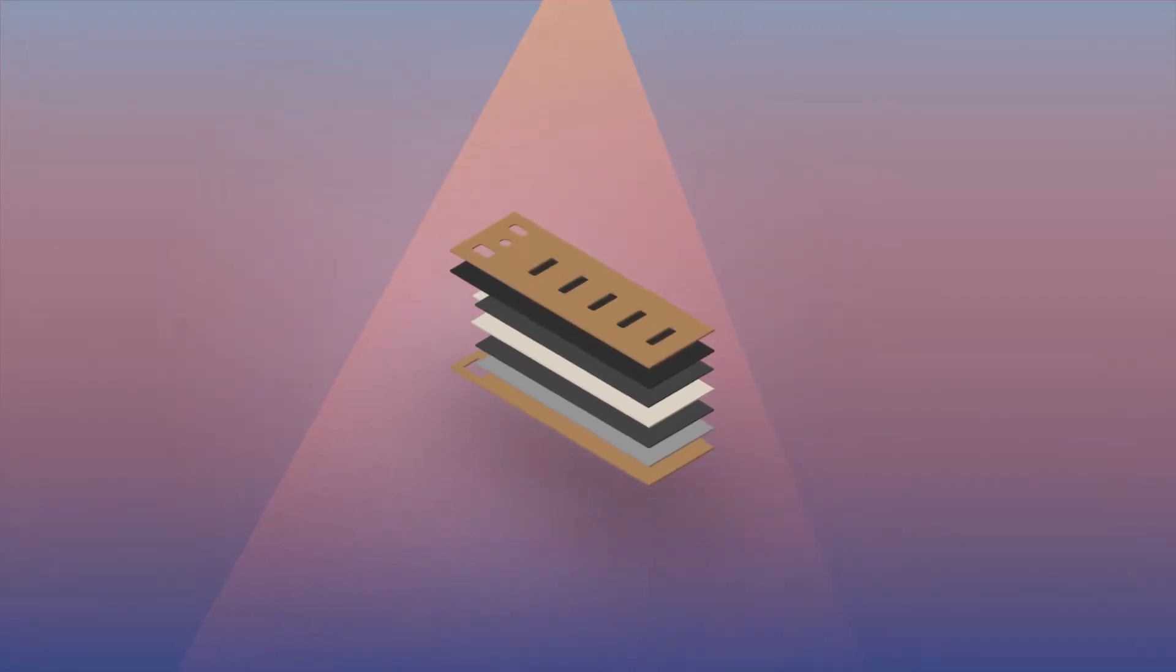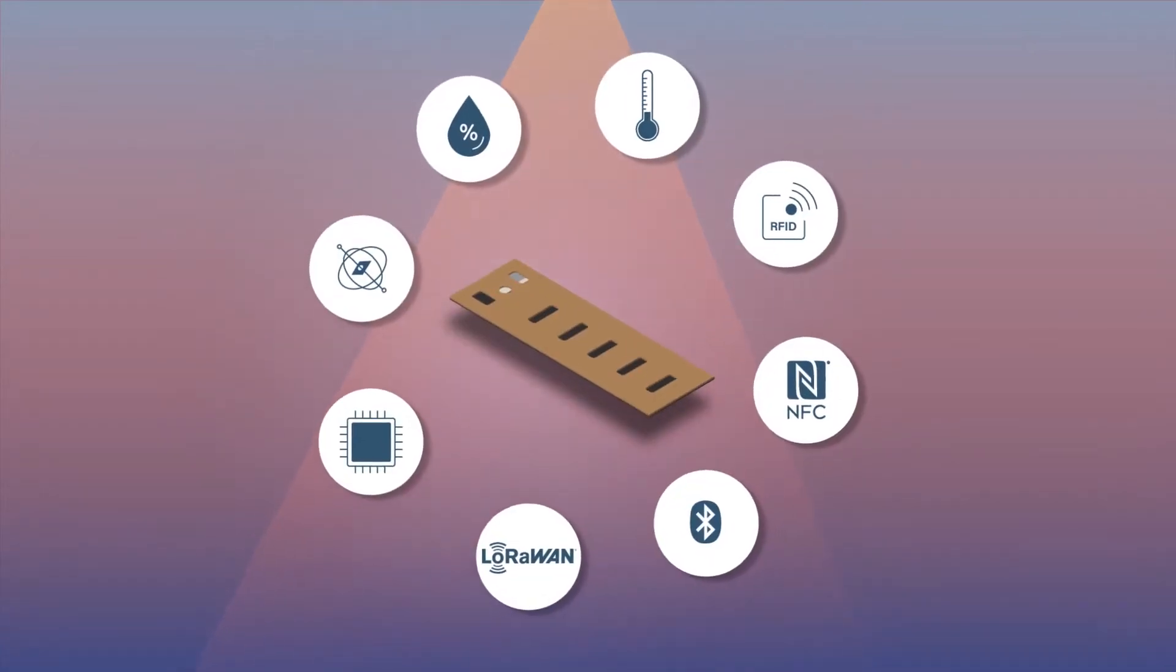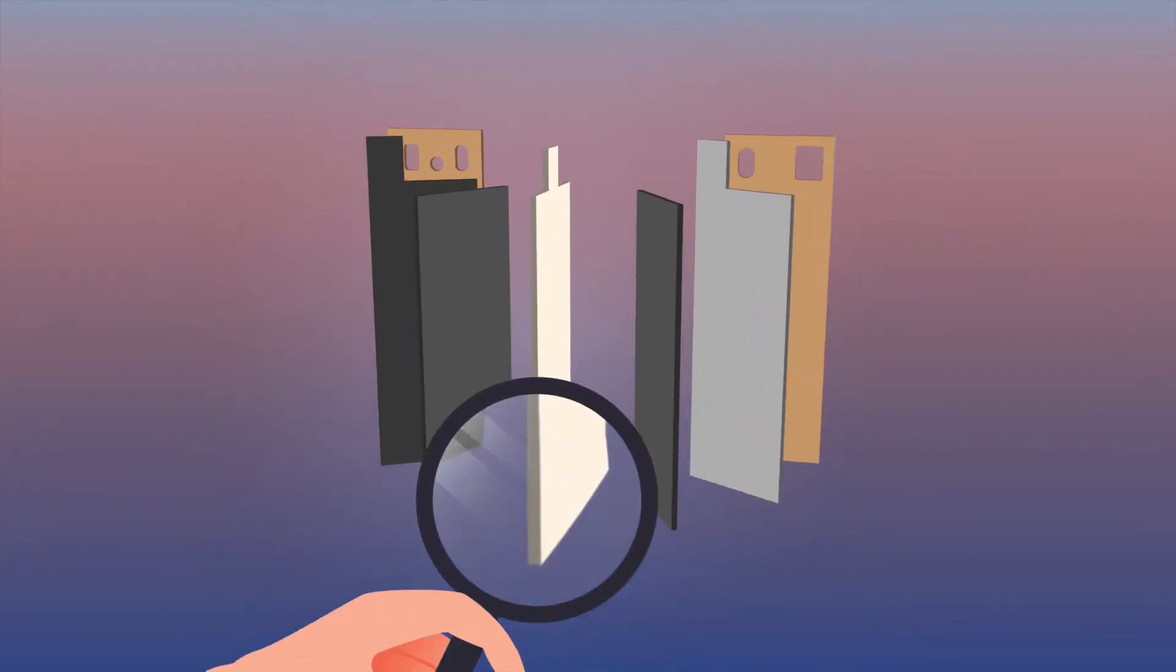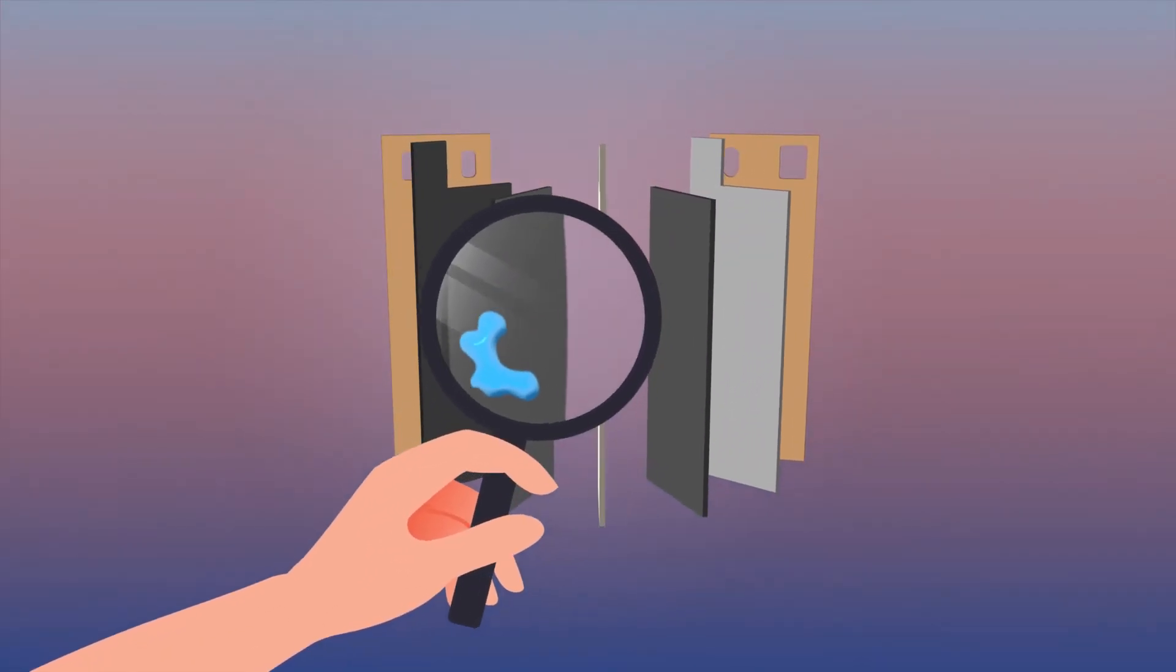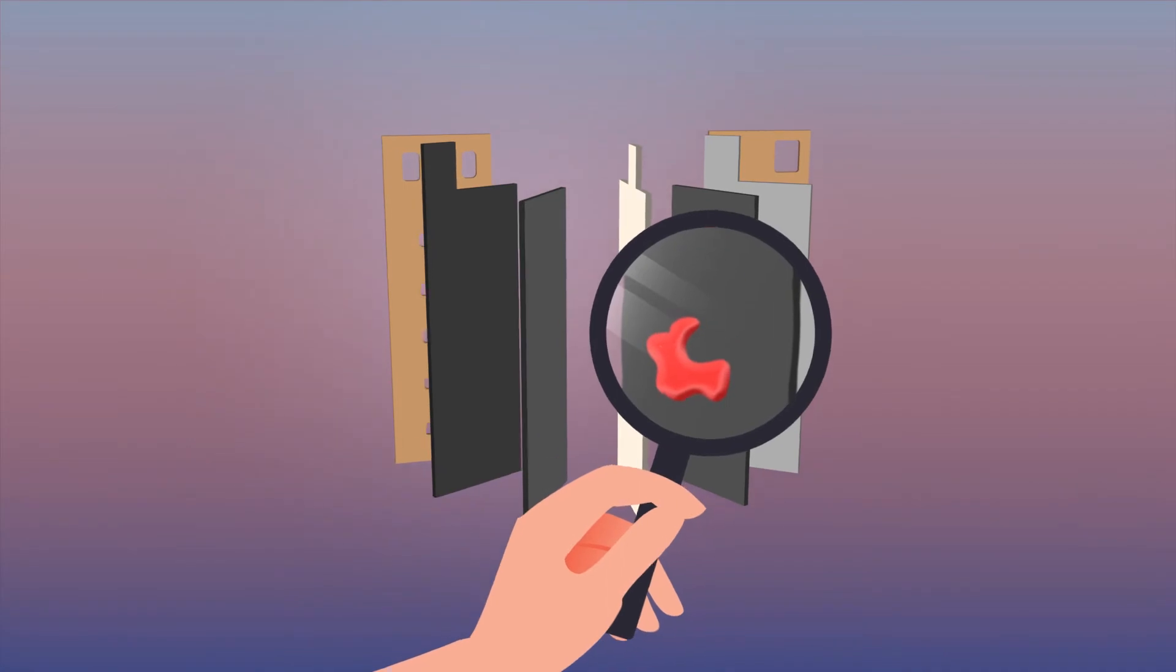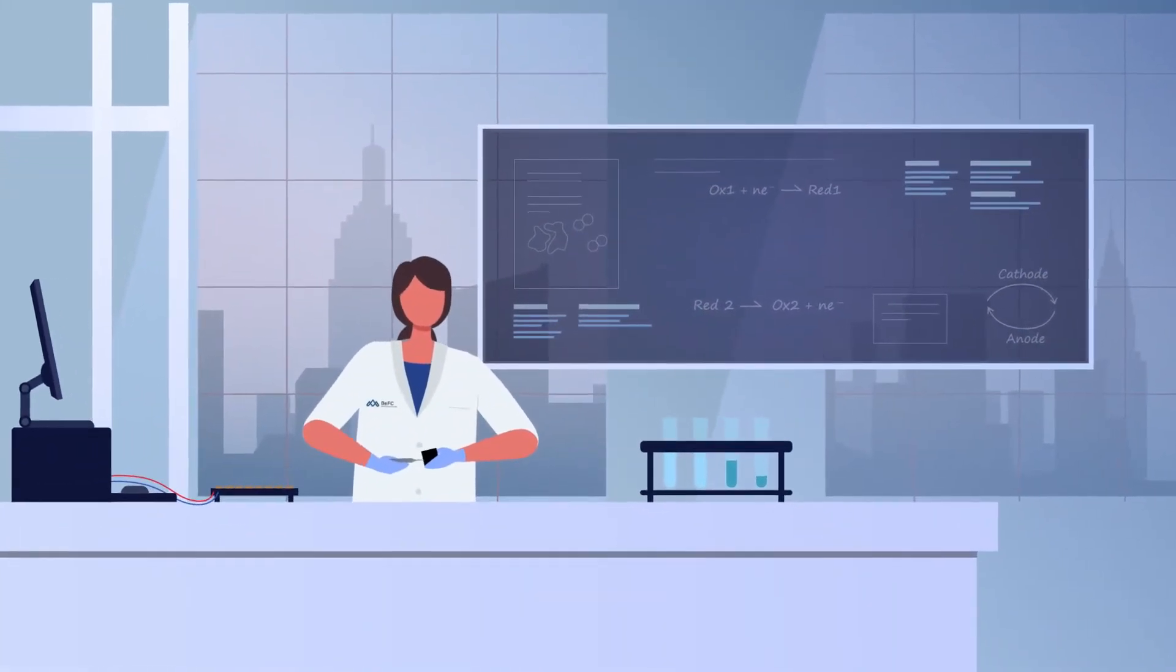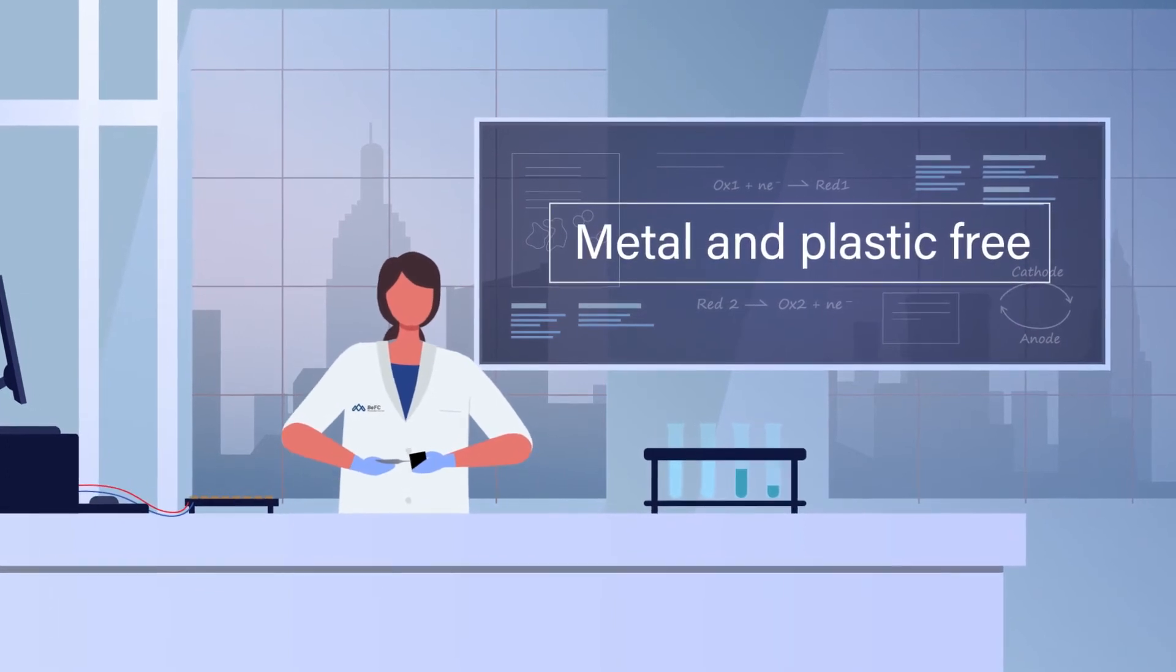BFC offers an eco-friendly and sustainable energy solution for low-power electronics. Our paper biofuel cells use enzymes to convert sugars and oxygen into electricity. We use bio-sourced and sustainable materials and our technology is completely metal and plastic free.